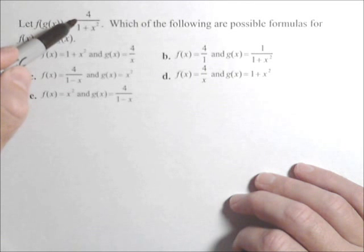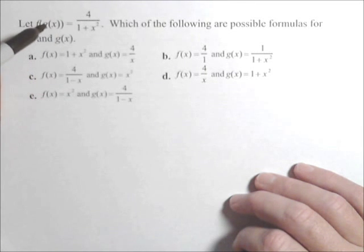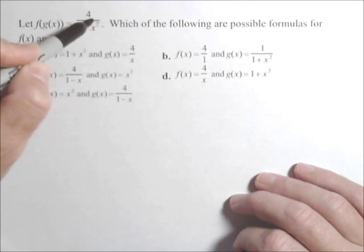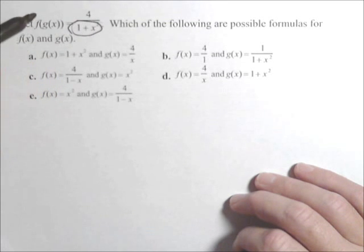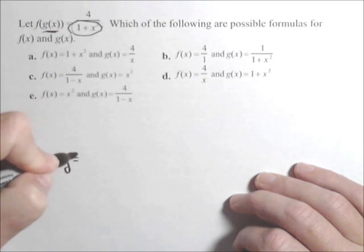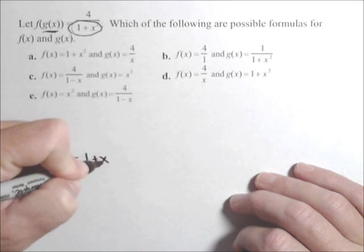So one decomposition that I see is I can treat the one plus x squared as my inside function. So g of x would be one plus x squared.